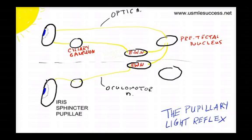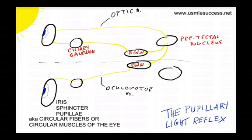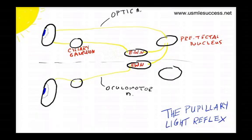We call this the iris sphincter pupillae. These muscles may also be known as circular fibers of the eye or circular muscles of the eye. When we stimulate these constrictor muscles of the iris, it leads to constriction of the pupil. The eyes adjust to the increase of light in our environment.